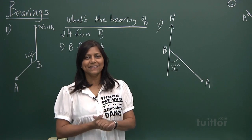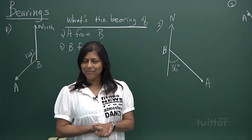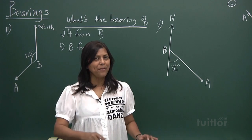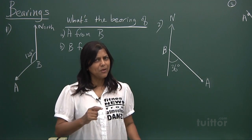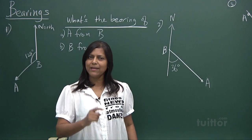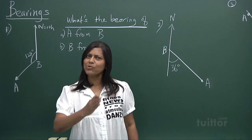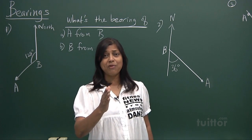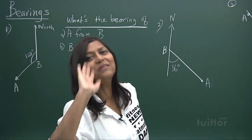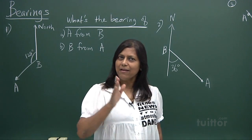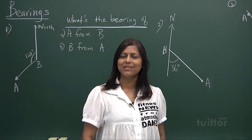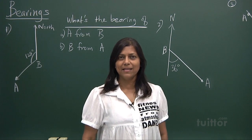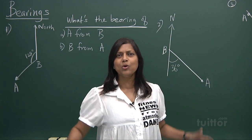We're going to move on to a higher level of trigonometry — bearings. It's very important to get your bearing right. When people say 'get your bearing right,' they mean get your direction right. For maths, that means knowing your direction. Your bearing is about the compass — even when you go tracking, you need a compass.